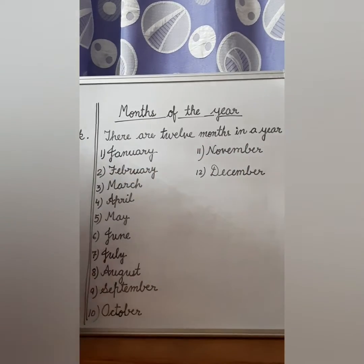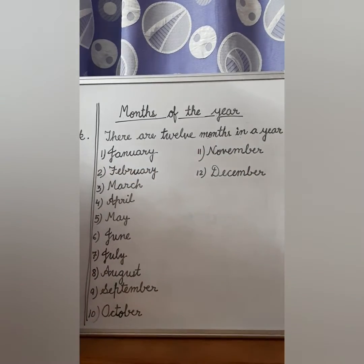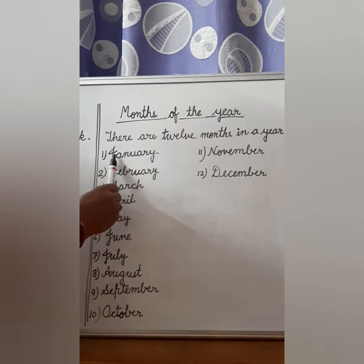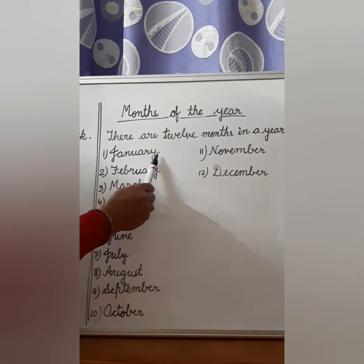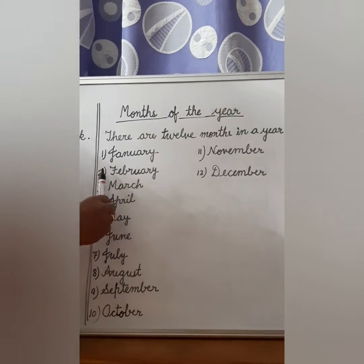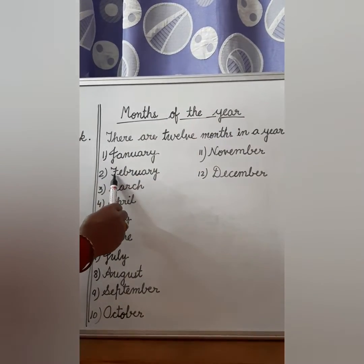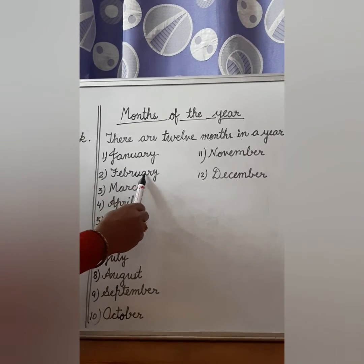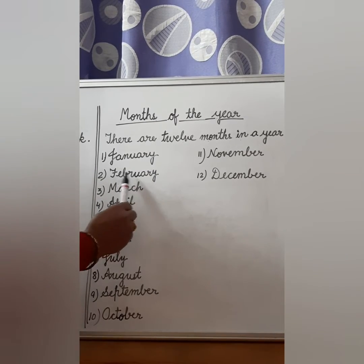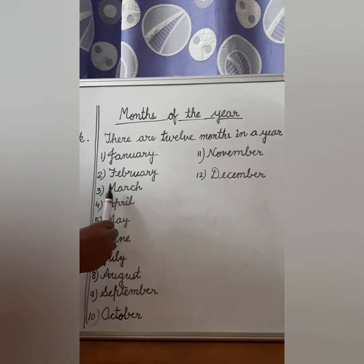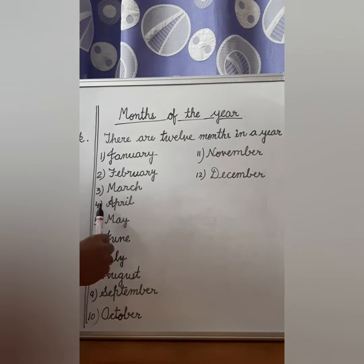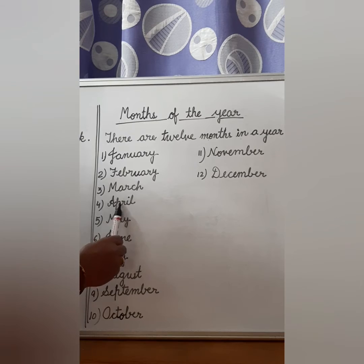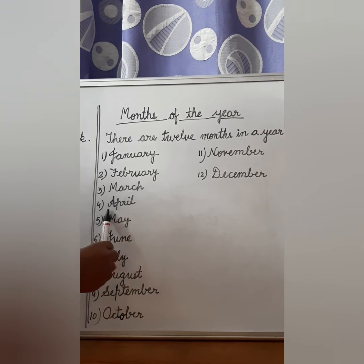There are 12 months in a year and they are: number 1 — January, J-A-N-U-A-R-Y, January. Number 2 — F-E-B-R-U-A-R-Y, February. Third — March, M-A-R-C-H, March. Then comes April, A-P-R-I-L, April.